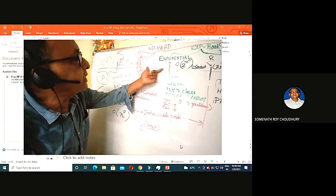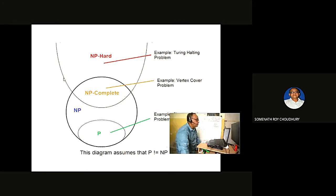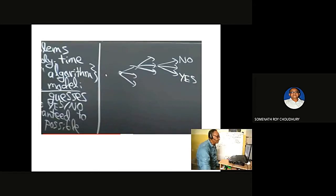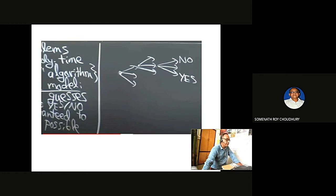NP hard means you cannot even verify the solution — unlike NP complete where verification is easy. NP hard is beyond NP complete. An NP problem always takes a lucky algorithm — it always takes the right guess at the first chance; it is not exhaustive. This is the bedrock of the non-deterministic solution — it always finds the answer luckily.